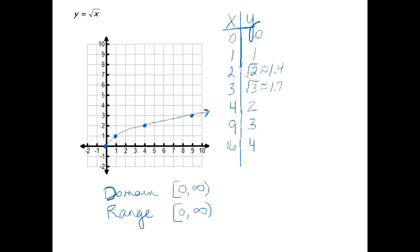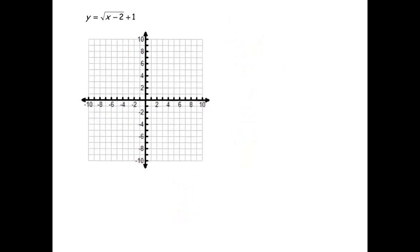So now that we know the basic shape of a square root graph, let's play around. Let's do an equation where it is shifted in multiple directions. So in this example, you can see that we have a square root. And now inside the square root, we have an x minus 2. So I hope we remember that this minus 2 means that the graph was moved right two spaces. And that this plus 1 is moving the graph up one space.